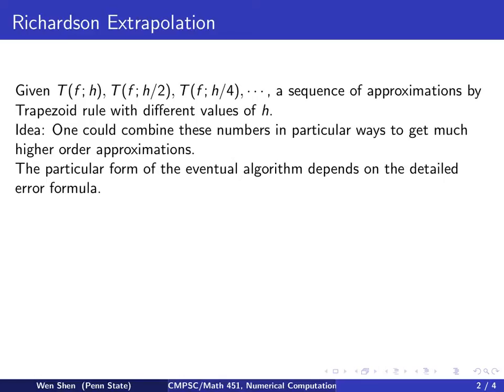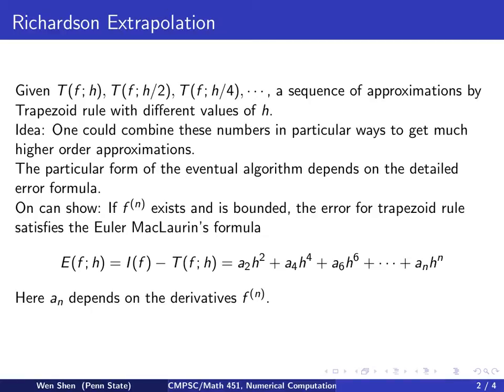The particular form of your eventual algorithm will depend on the error formula, and this is really important. It has to be a very detailed error formula. One can show that for the trapezoid rule, the error satisfies the Euler-Maclaurin formula. That is, it resembles some kind of a Taylor formula. We assume that f to the nth derivative exists. If f is C infinity, then you could write infinitely many terms here.